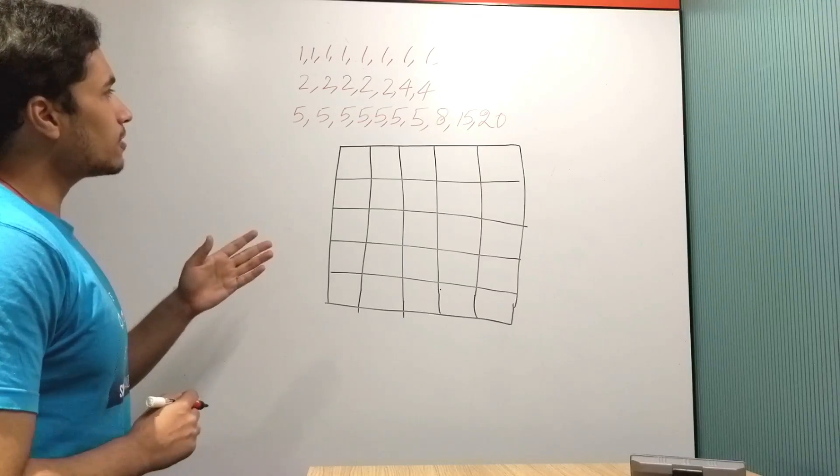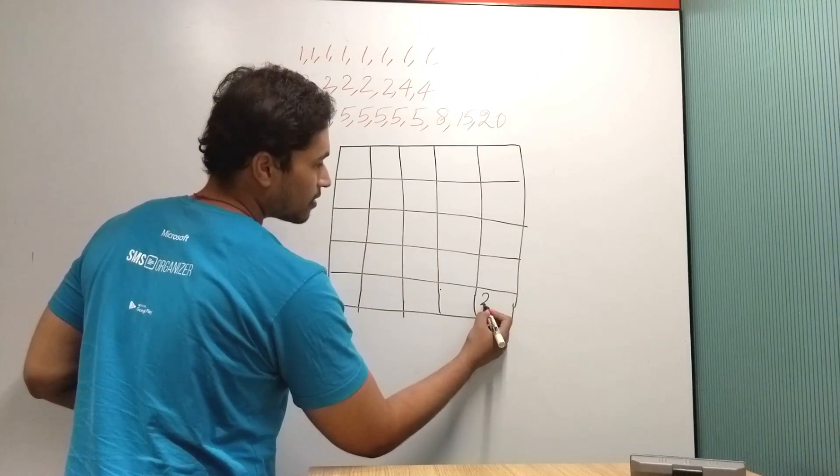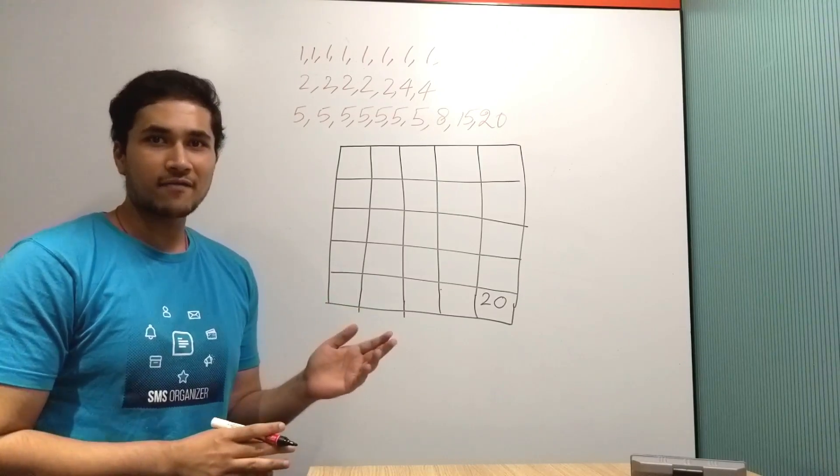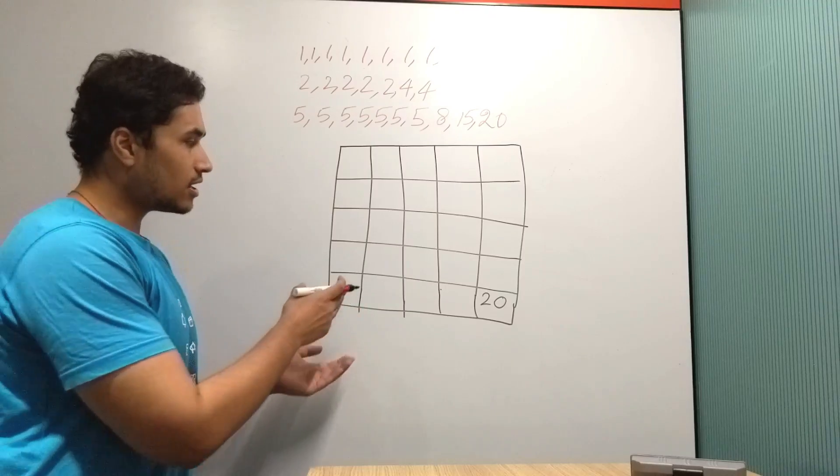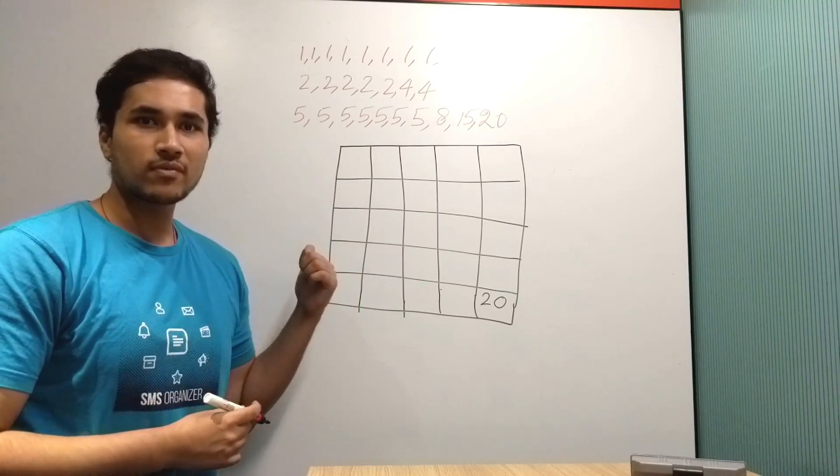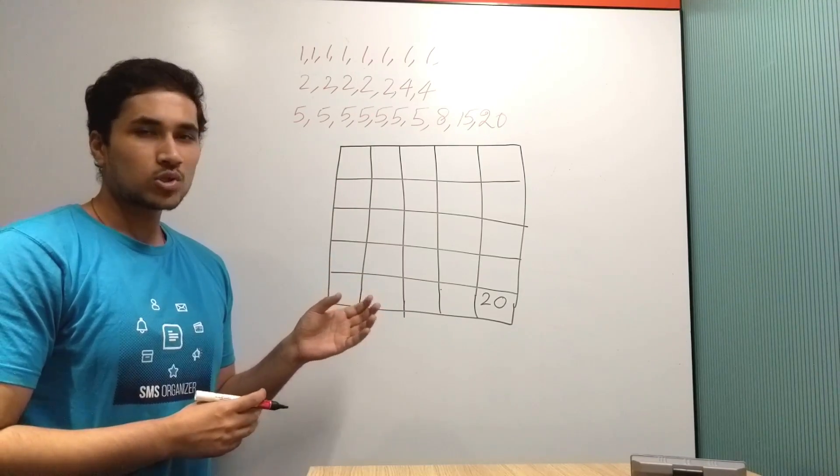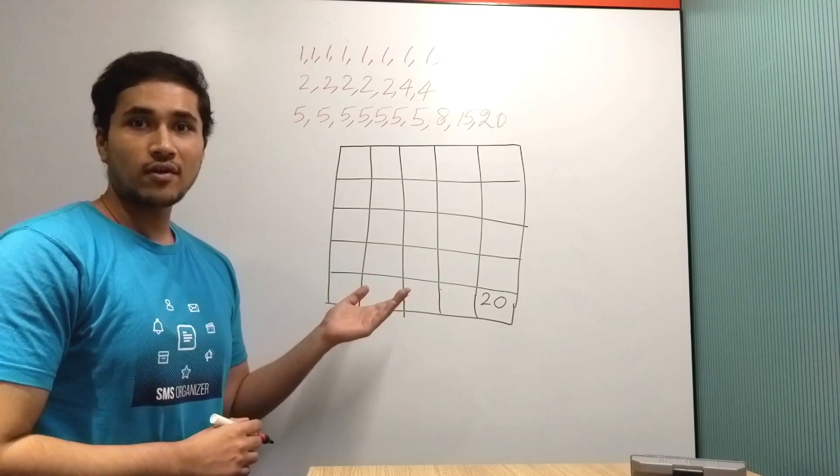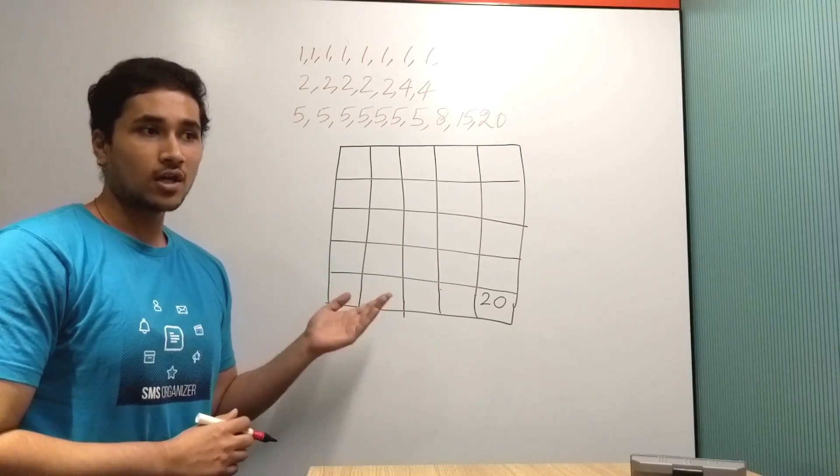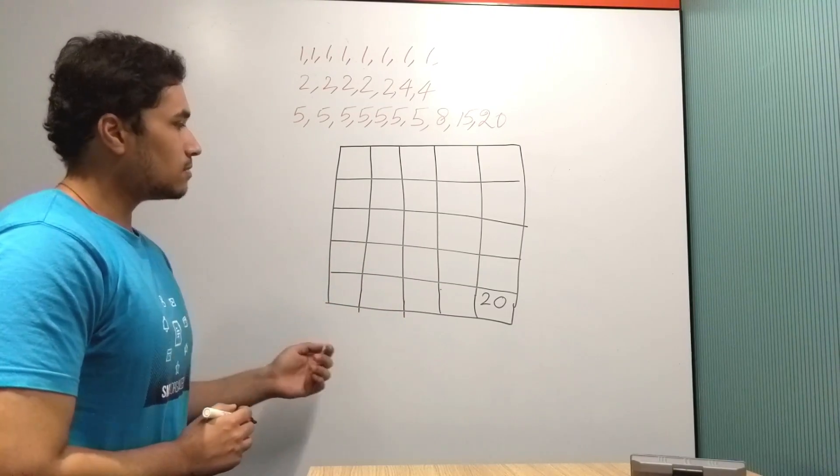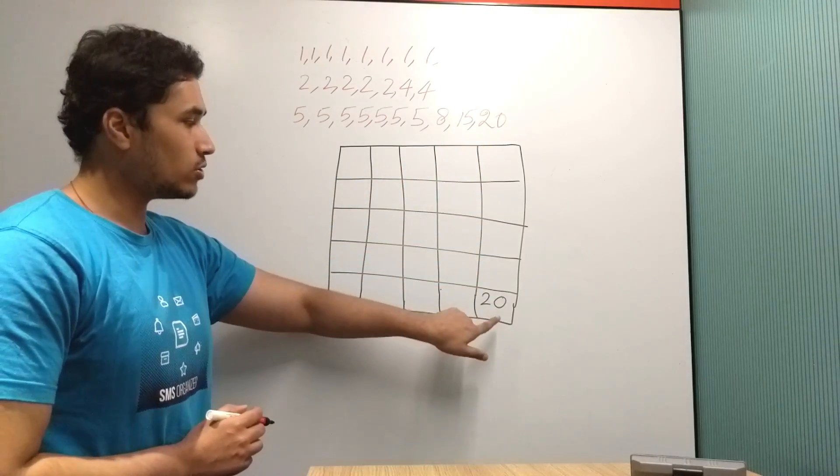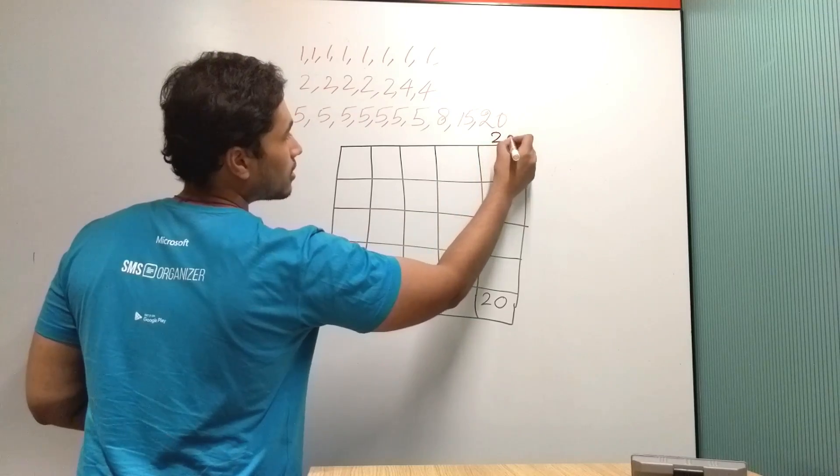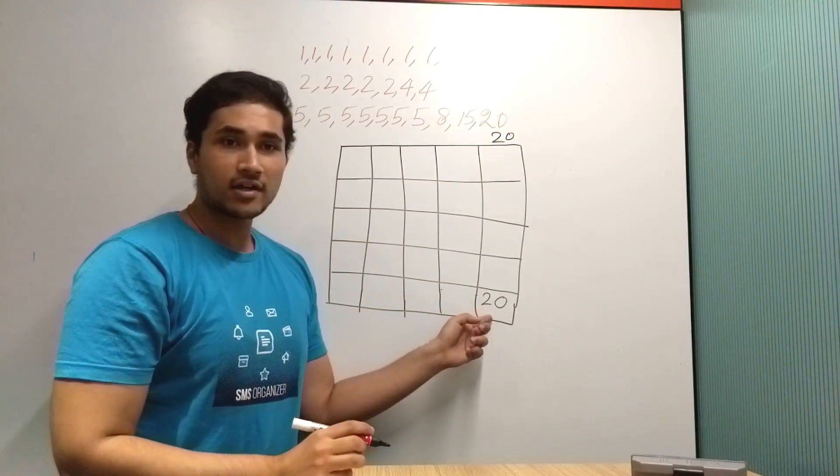Alright, so I'm dead sure that this number that we have over here is 20, and this is one of the 5 numbers that Gaurav was having. Because the numbers in the matrix are GCD of two numbers from the array, which means those numbers have to be smaller than the numbers in the array. So I know that the GCD of the greatest element that Gaurav has thought will occur. And the greatest number here is 20, so I'm dead sure it is coming from the GCD of 20 and 20.